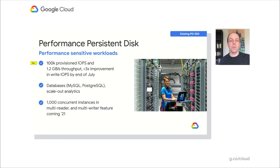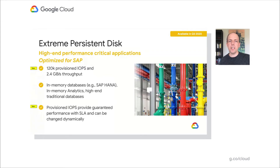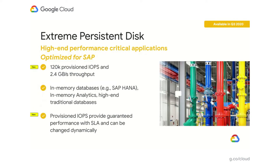For use cases that need more IOPS or more throughput than Performance PD offers, we are introducing Extreme PD. Extreme PD is our new disk type for high-end performance-critical applications. It has been designed with SAP HANA and other high-end in-memory databases in mind. At launch, it will offer 120,000 provisioned IOPS and 2.4 gigabytes per second of maximum sustained throughput. Extreme PD introduces provisioned IOPS, allowing you to provision capacity and performance separately. Provisioned IOPS are specified at disk creation and can be changed dynamically at any time, allowing you to adjust disk performance to specific workload requirements over time. Next year, there will also be explicit performance SLAs for provisioned IOPS. Extreme PD is preview available this month and general availability is expected in the third quarter.